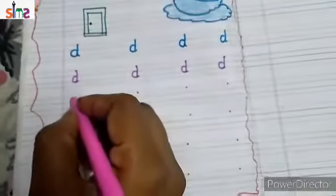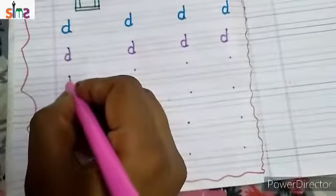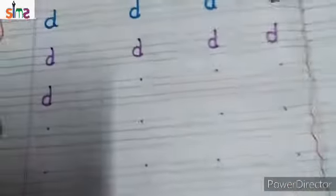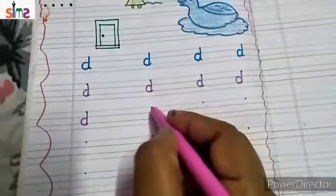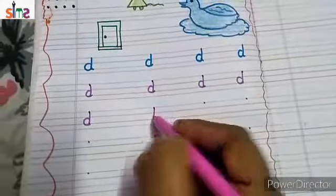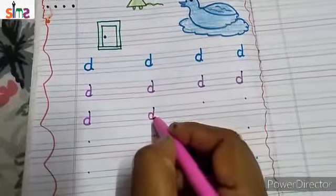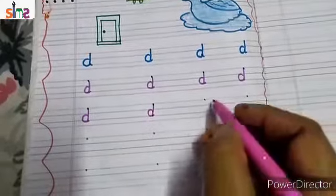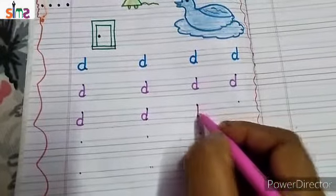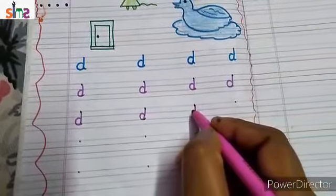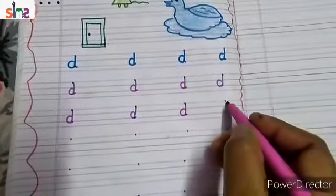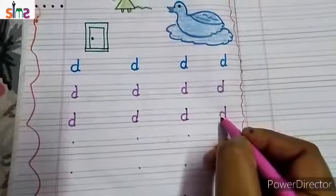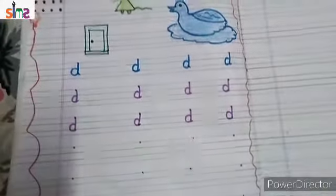One standing line and one curved line. How to write small d? One standing line then one curved line. Small d. Standing line then curved line. Small d.